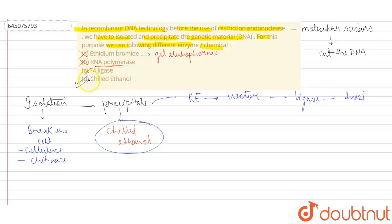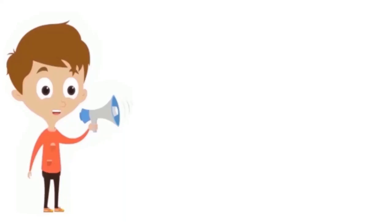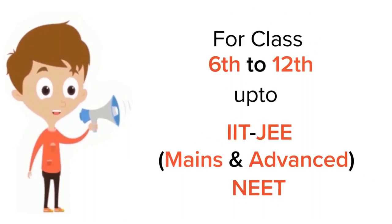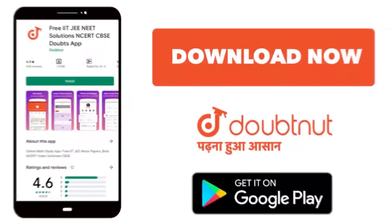The only correct option is option D, chilled ethanol. Thank you. For class 6 to 12, IIT-JEE, and NEET level, trusted by more than 5 crore students, download Doubtnet.